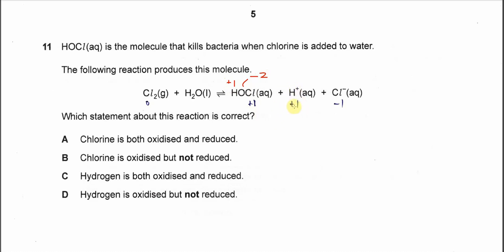The hydrogen ion is positive one and the chloride is negative one. So after reaction, chlorine now is oxidized to positive one and reduced to negative one.